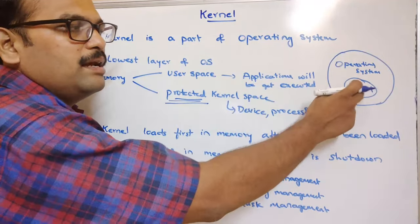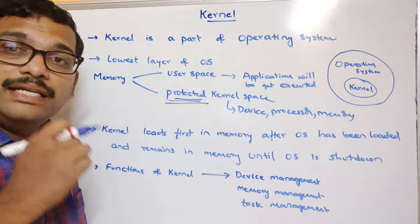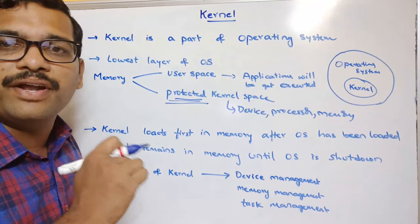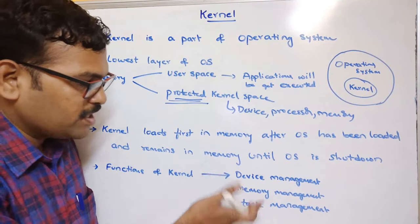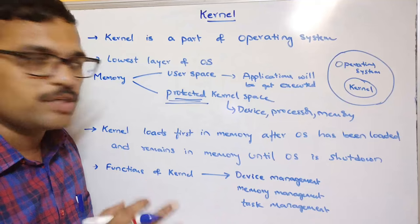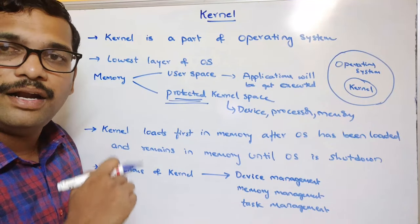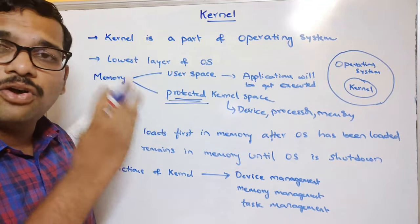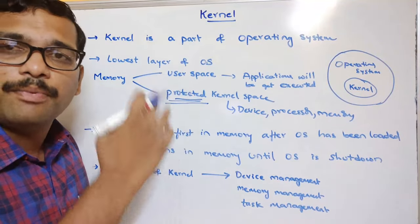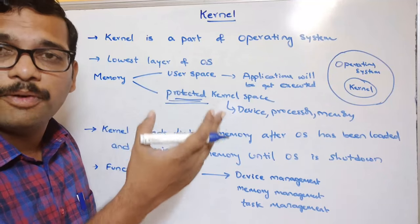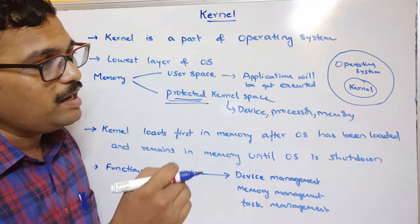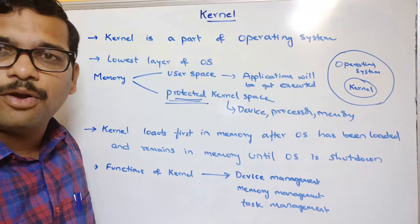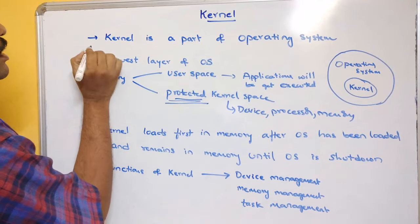One more question: is the kernel hardware or software? The kernel is system software — it's a part of an operating system. Are the kernel and the operating system equal? No, they are not. The kernel is the lowest layer included in the operating system, which provides services for all other parts of the operating system. So both are different.